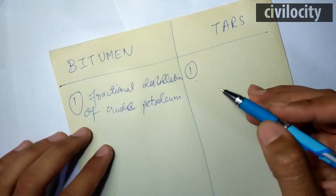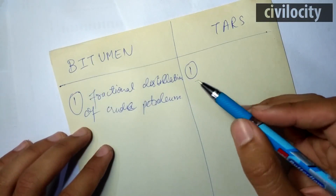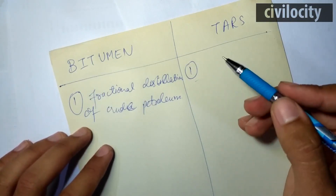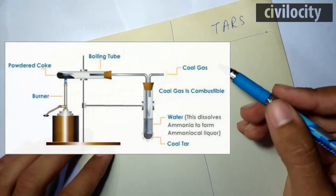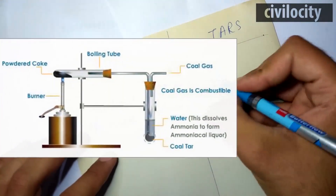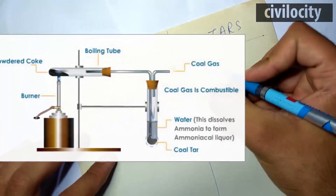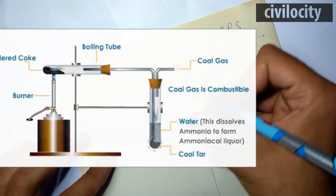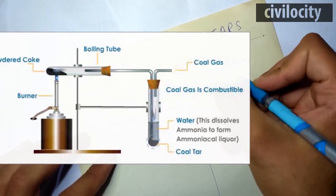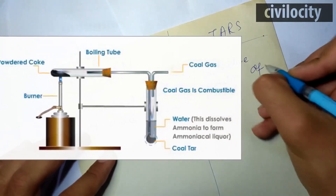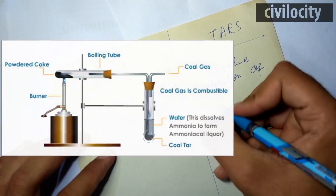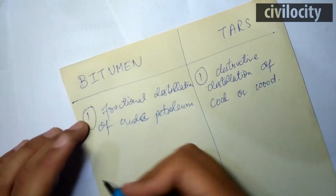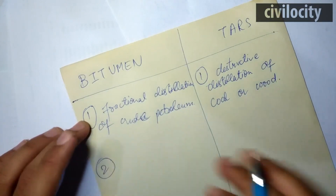Whereas tars are formed by destructive distillation of coal and wood. There are a couple of processes: the first is coking of coal in the coke oven, where the final byproduct formed is coal tar. The second process is during the production of coal gas, where coal tars are also formed.